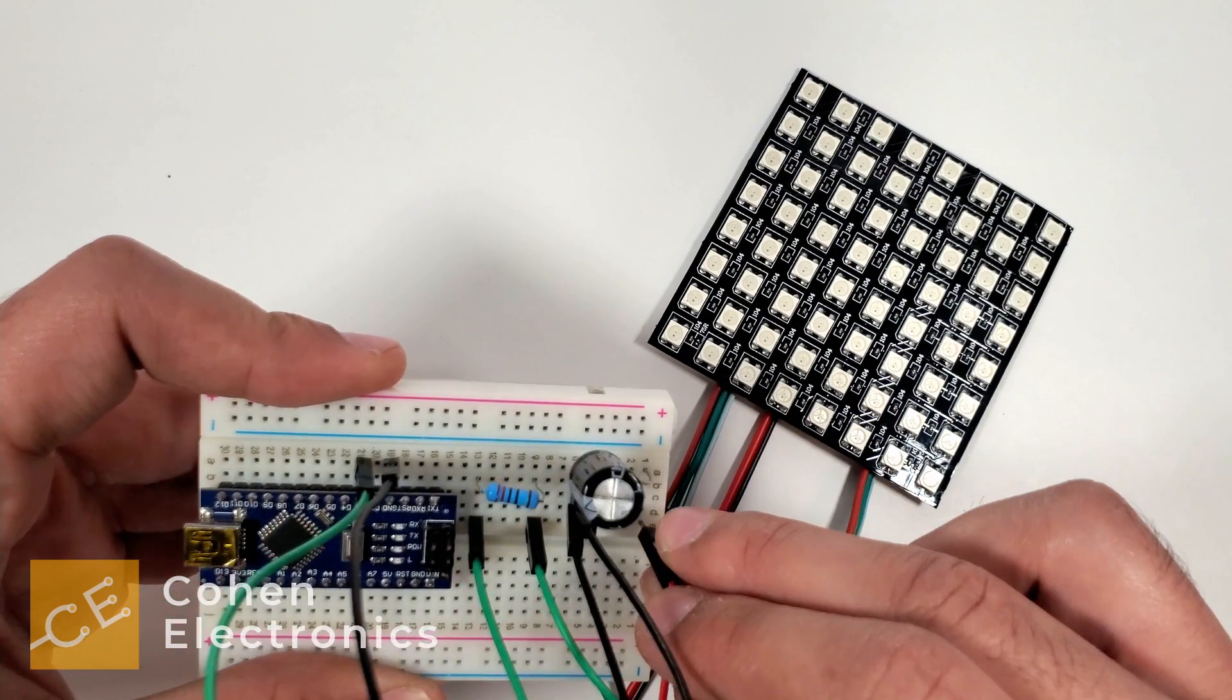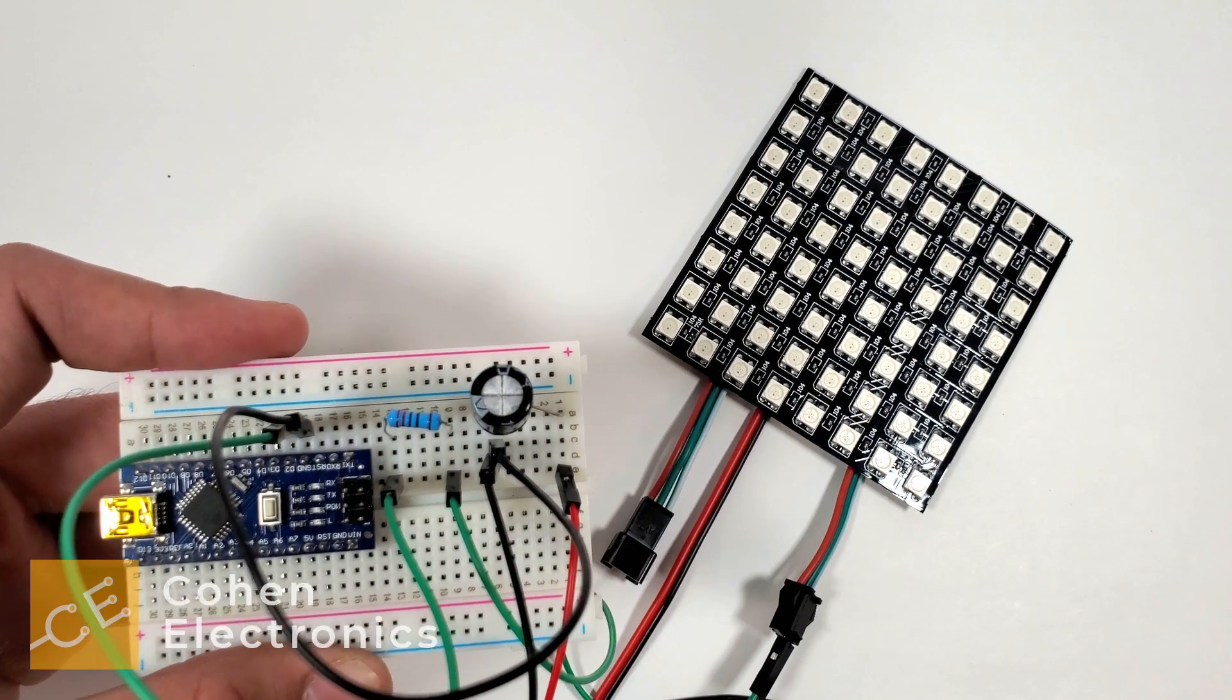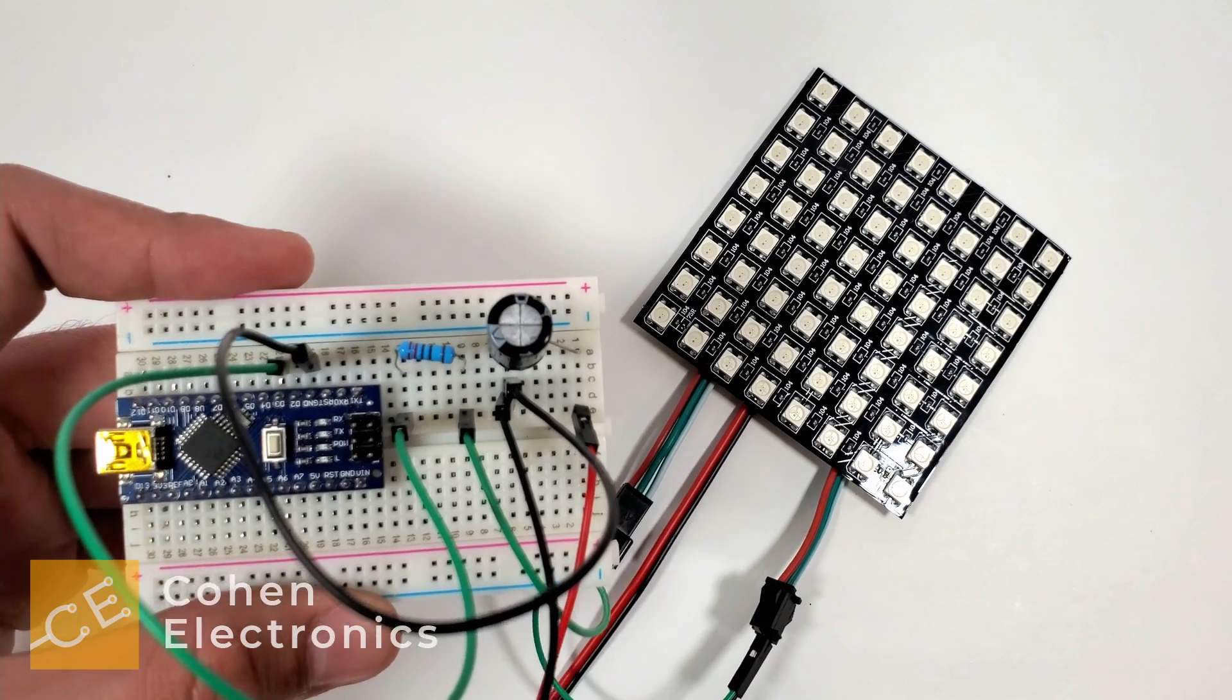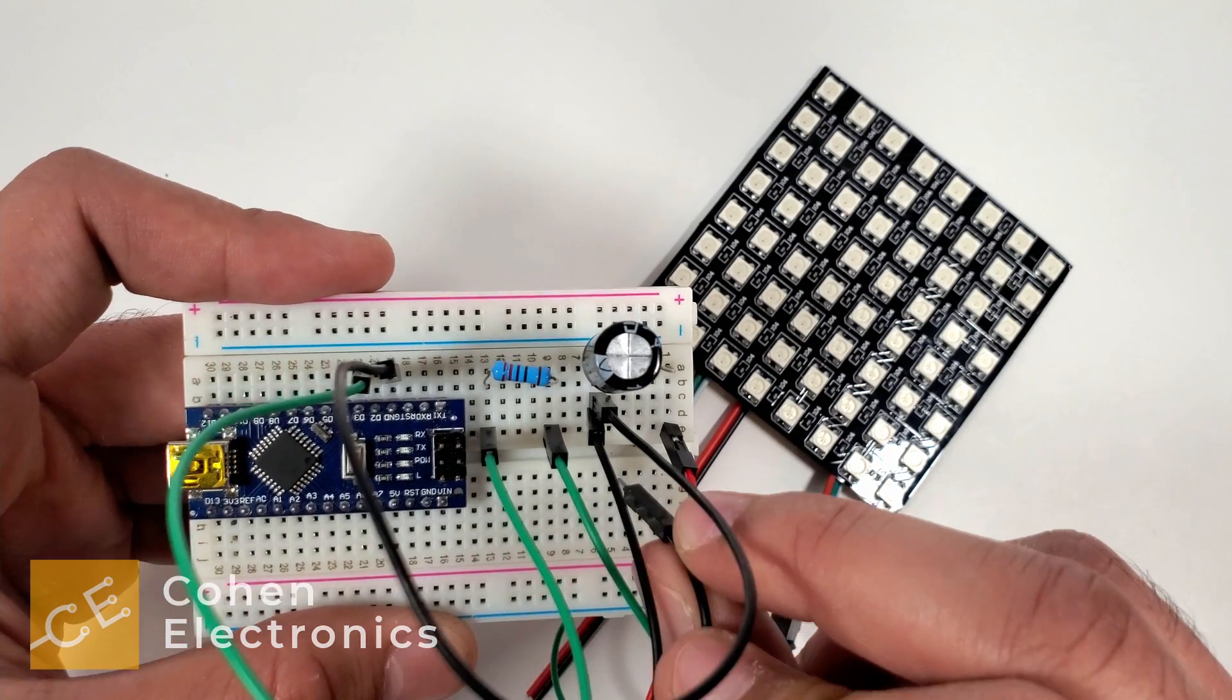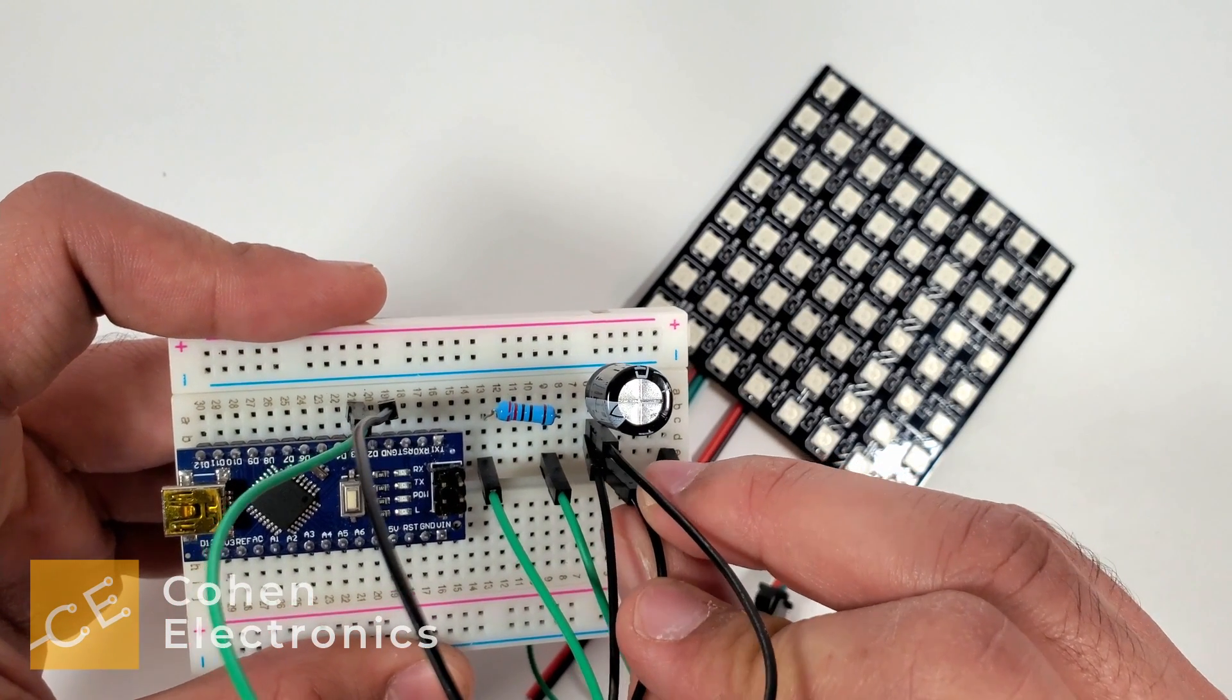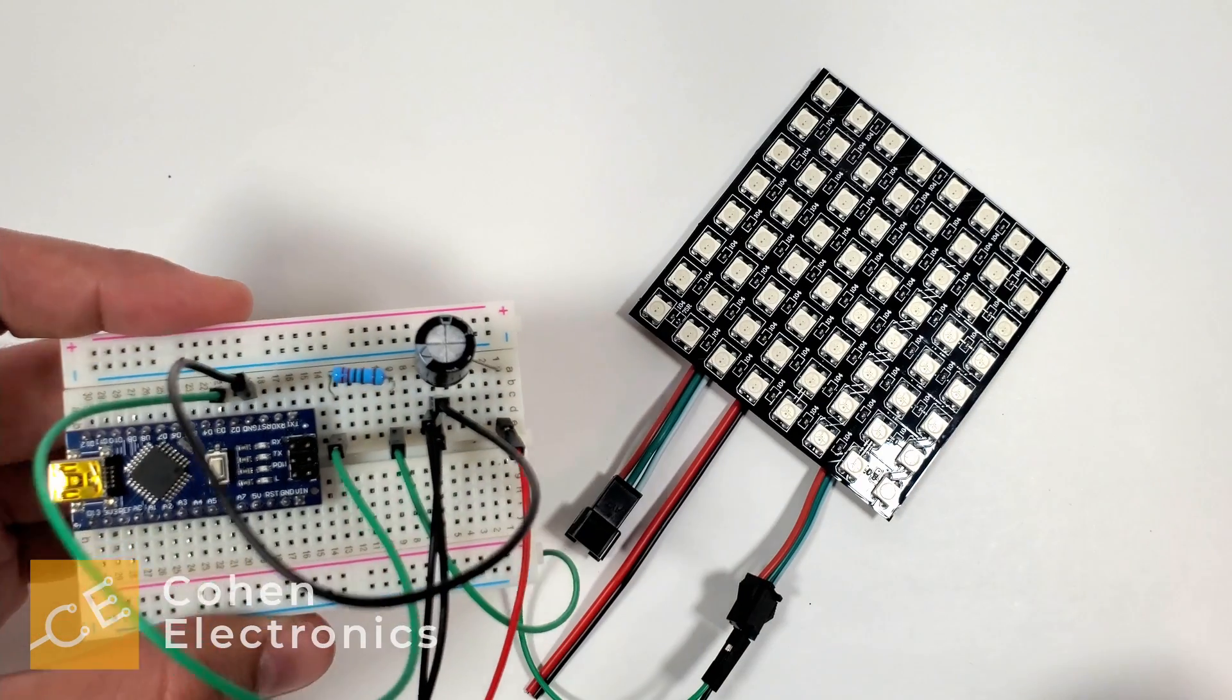Connect the positive wire of the power supply to the positive leg of the capacitor. Next, connect the negative wire of the power supply to the negative leg of the capacitor.